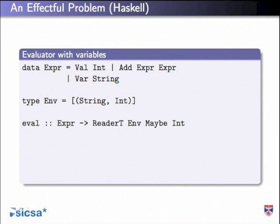A monad in Haskell is basically a way of encapsulating some computation. Maybe is a computation that might fail, and reader is a computation that has some state carried around with it. A monad transformer is just a way of wrapping one monad inside another - it's a way of having a lot of different computational effects together. Typically in a Haskell program you'll have a stack of these monad transformers: you start with maybe, then add reader on top, and maybe more on top of that.